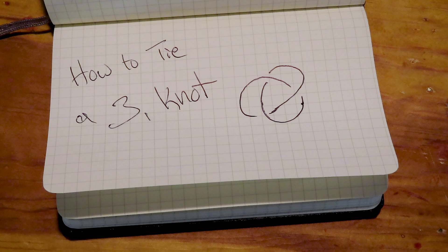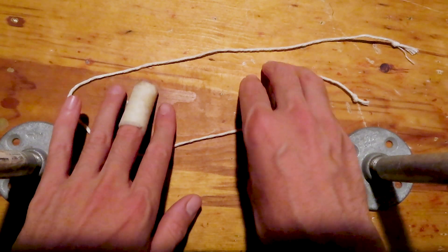The 3-1 knot is known to mathematicians and Celtic knot enthusiasts as the trefoil knot. To everyone else, it's probably the overhand knot.